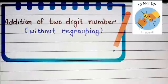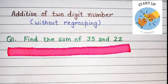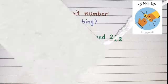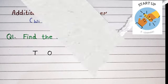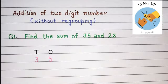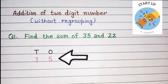Let's start with this example. Find the sum of 35 and 22. Before starting the sum, first we will put them in the right columns, that is ones and tens. Let's arrange these numbers. Take 35 first. 5 will be written under the ones place and 3 will be written under the tens place.